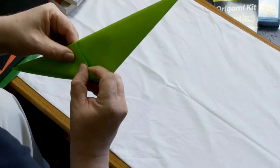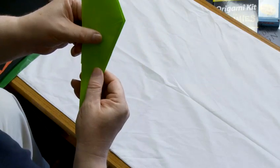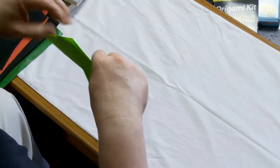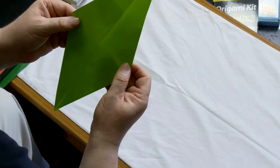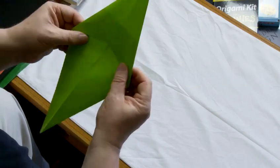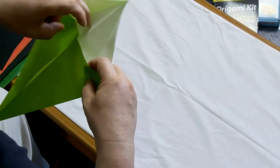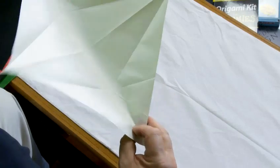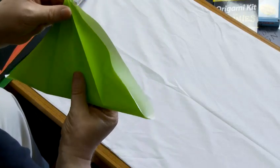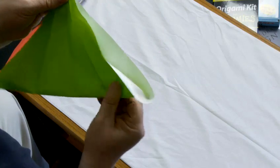Do the same on the other side with the other little triangle. So we finish up with a diamond shape on that side, a diamond shape on that side with some flaps. What we're going to do now is fold the paper diagonally the other way, the way we did it first of all.